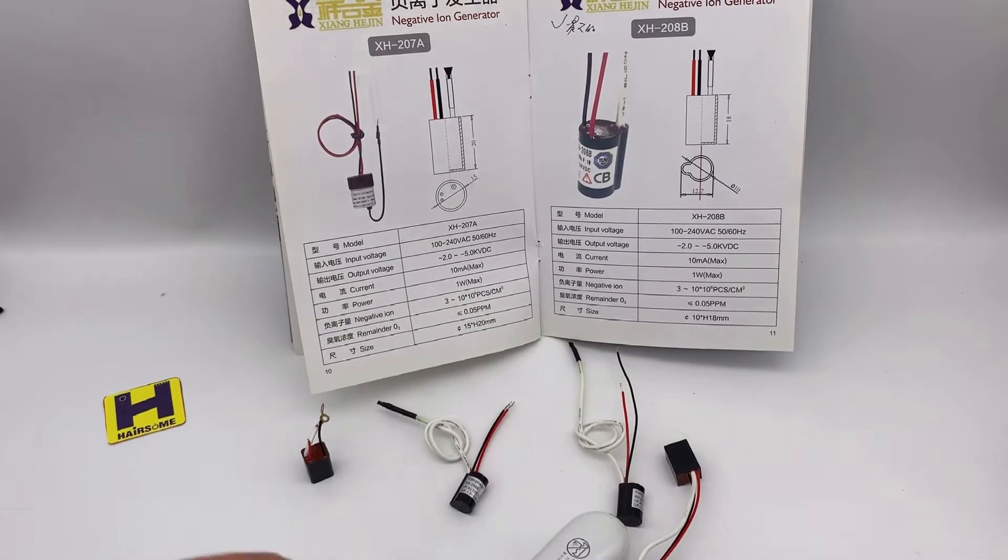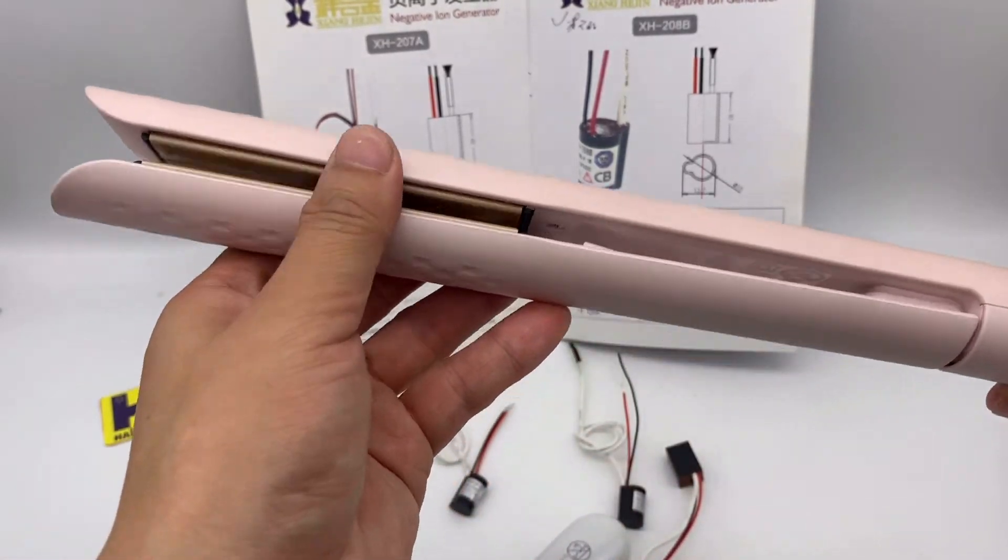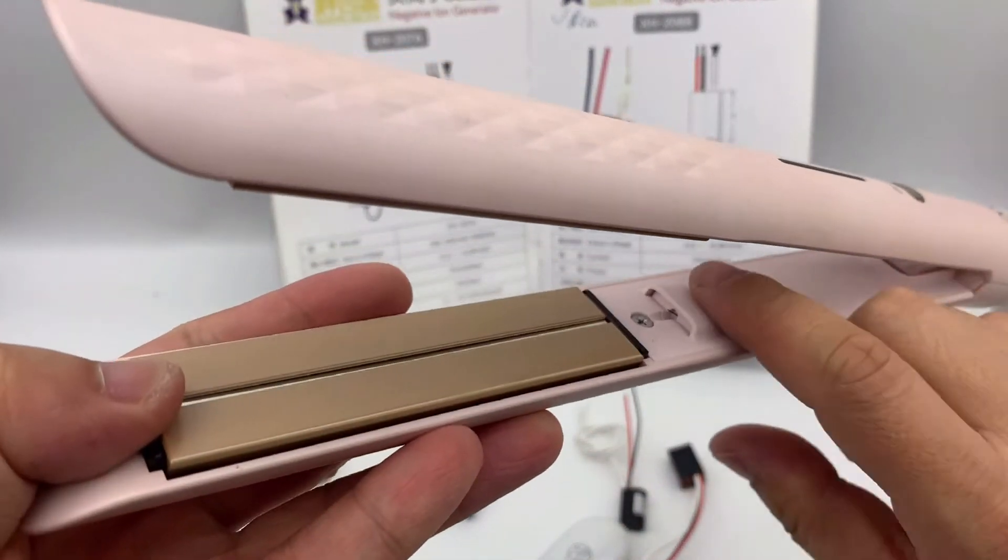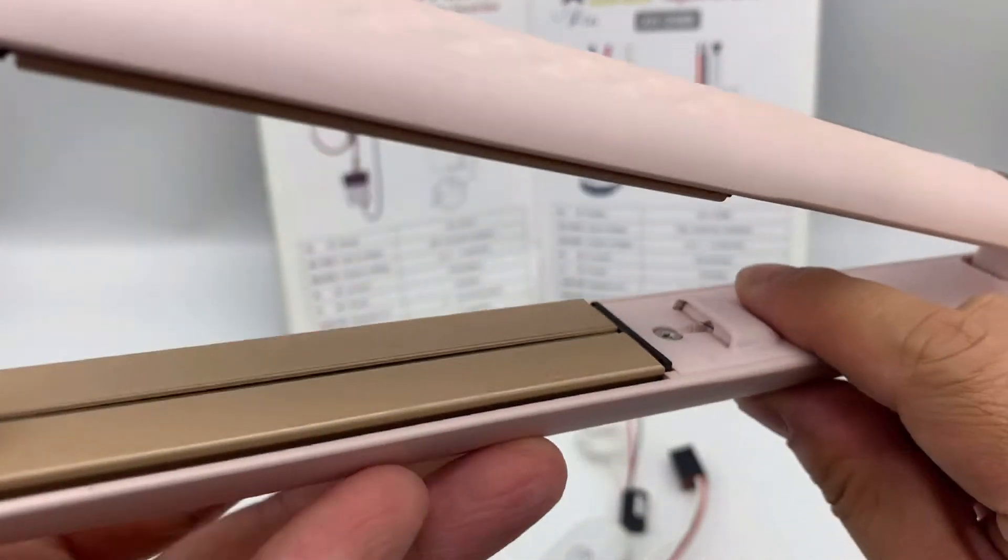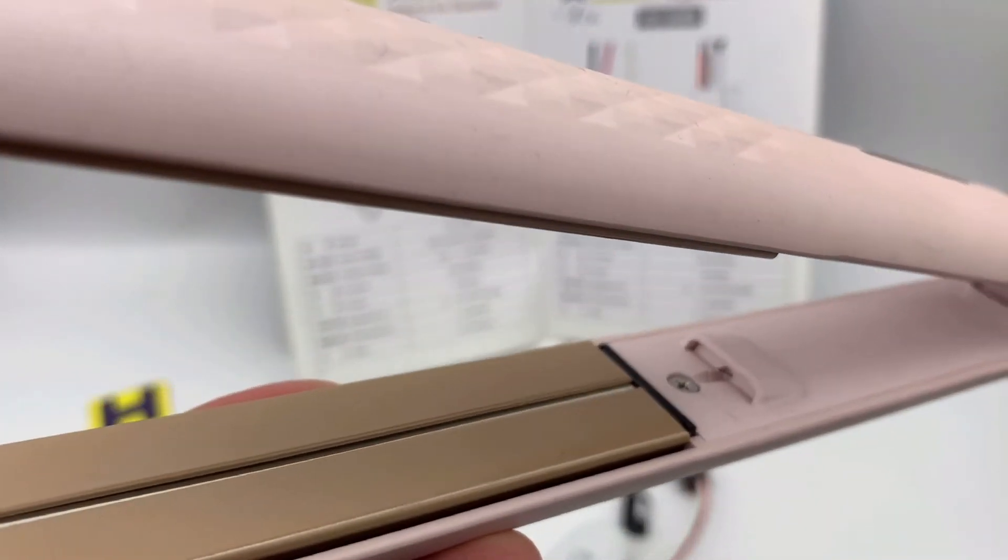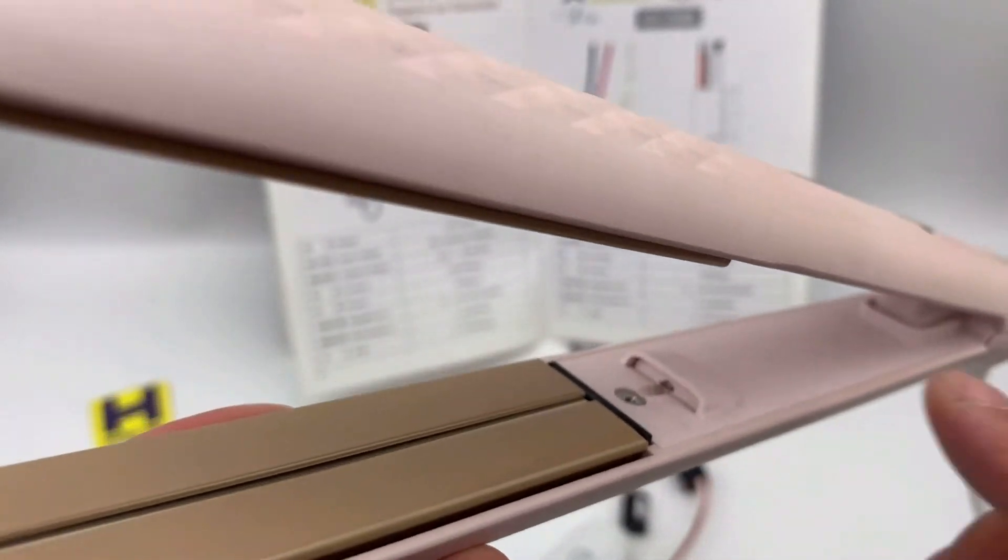For the hair straightener, this hair straightener here, you have ironing function. So you have a little pin here.